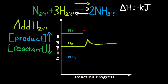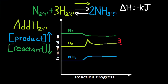N2 is a reactant and reactants decrease, so N2 decreases. NH3 is a product and products increase, so NH3 increases. However, H2 won't decrease more than its initial amount. The impact of increasing and decreasing is dependent on the coefficient — H2 has a coefficient of 3, so it would decrease more compared to N2 which has a coefficient of 1. Keep this in mind when graphing.